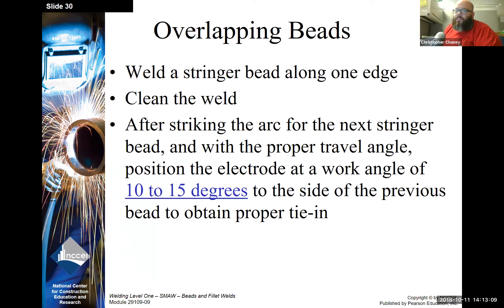Weld the stringer bead along one edge. Clean the weld. After striking an arc for the next stringer bead and with proper travel angle, position the electrode at a work angle of 10 to 15 degrees to the side of the previous bead to obtain proper tie-in.